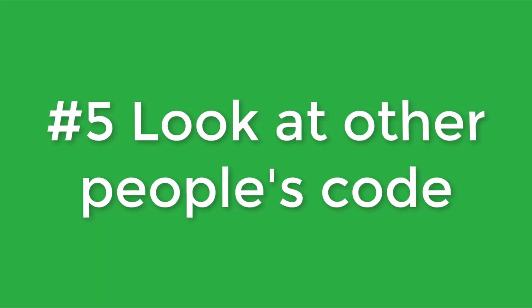Tip number five is to look at other people's code. There's nothing stopping you from going out and looking at code online — it could be in someone's GitHub repository or something you've seen on Stack Overflow. Actually look at that code, see how someone's done it, and it might give you some insight or better ways to improve your own code. This is another critical part of being a junior developer — looking at other people's code will help you improve your own by reviewing others.